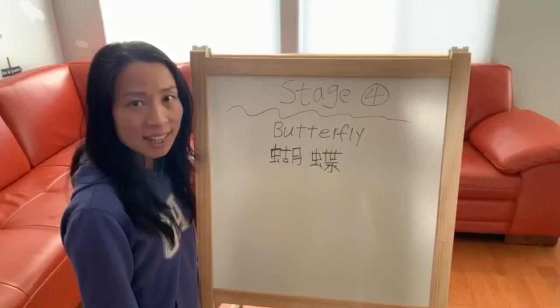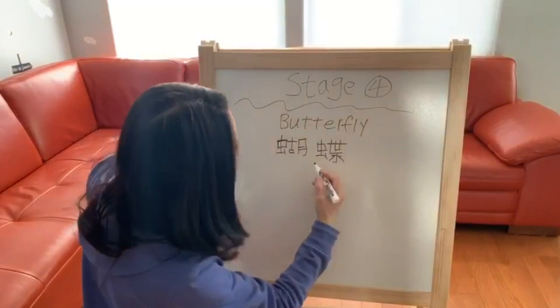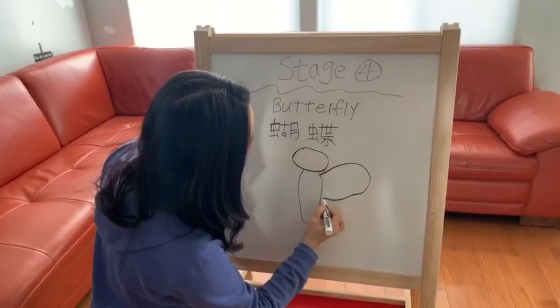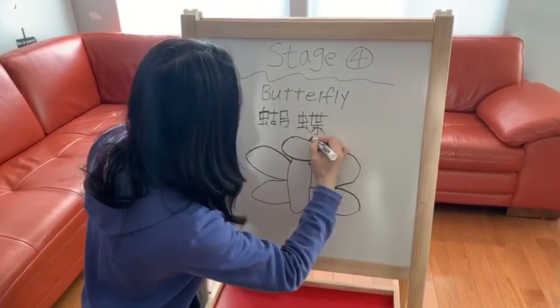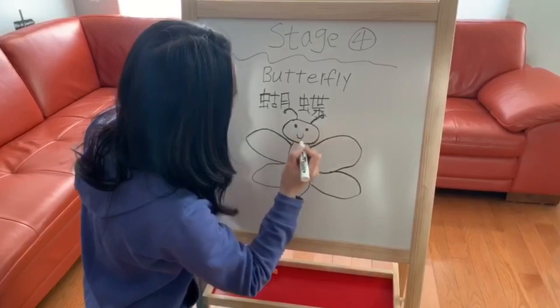Hi everyone, this is Joyce. Today we learn about the life cycle of butterflies. And first, we get the marker and draw the head, and the body, and the wings, and two antennae, and two eyes, and a big smiling face.